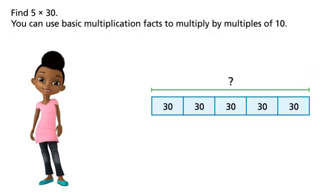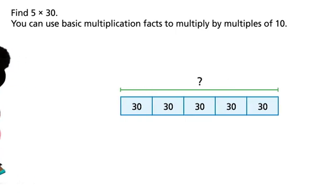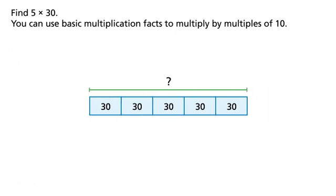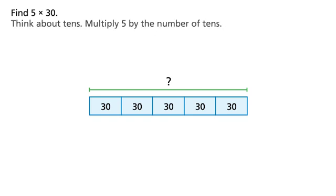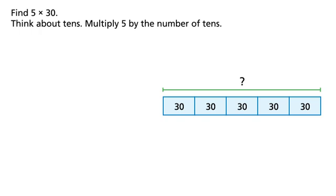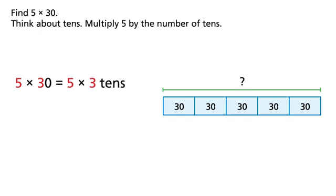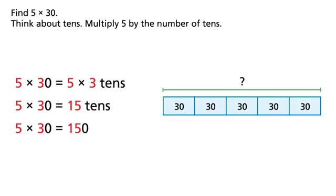Find 5 times 30. You can use basic multiplication facts to multiply by multiples of 10. Think about 10s — multiply 5 by the number of 10s. 5 times 30 equals 5 times 3 tens, or 15 tens, or 150. There are 150 crayons on one shelf.